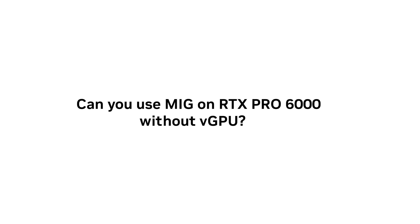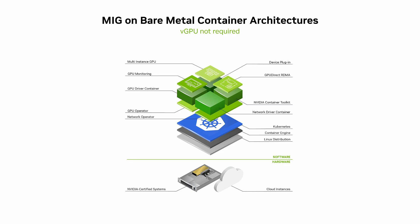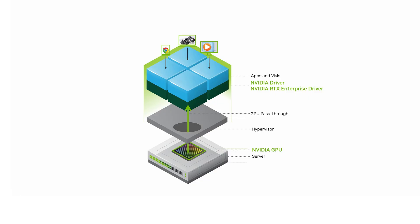Can you use MIG on the RTX Pro 6000 without vGPU software? Yes, in some cases. If you're running a bare metal Linux environment with something like Kubernetes in a containerized environment — i.e., no hypervisor — then you don't need vGPU. Essentially, if you are using a hypervisor, you need virtual GPU software to manage your virtual machines and allocate your GPU slices, whether MIG slices or time-sliced. The only exception is if you have a hypervisor but are passing the whole GPU through to a single VM and want to run different MIG partitions within that VM, but this wouldn't really be a common use case.